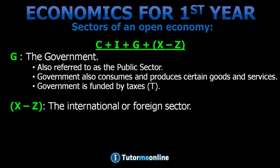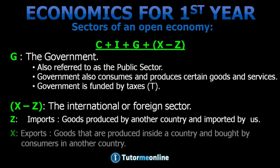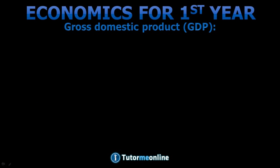X minus Z is for the international or foreign sector. Z is for imports — goods produced by another country and imported by us. X is for exports — goods produced inside a country and bought by consumers in another country.